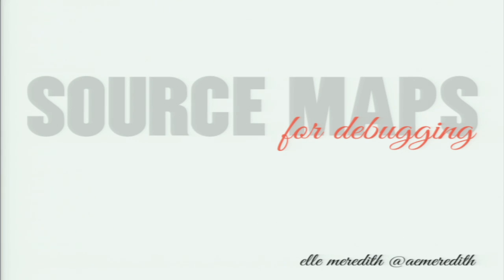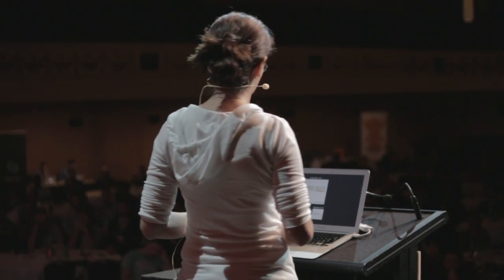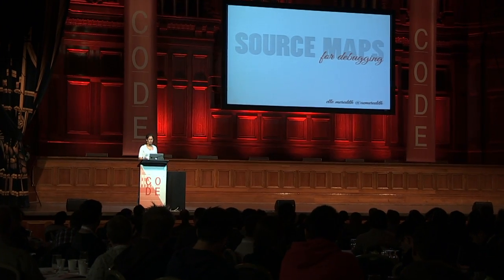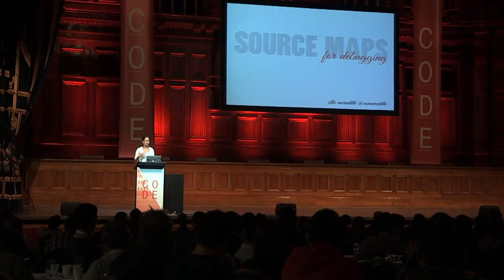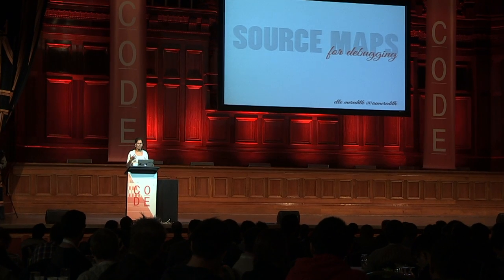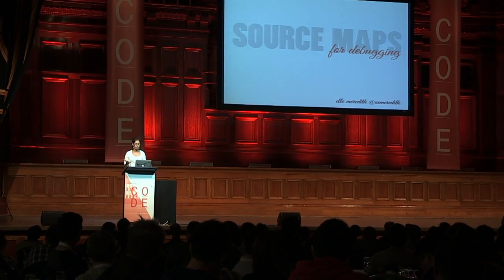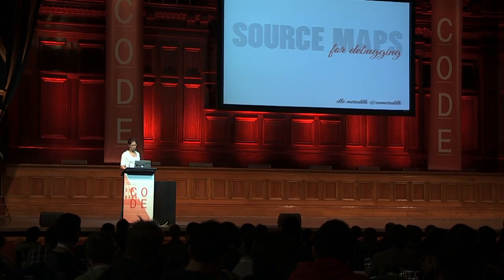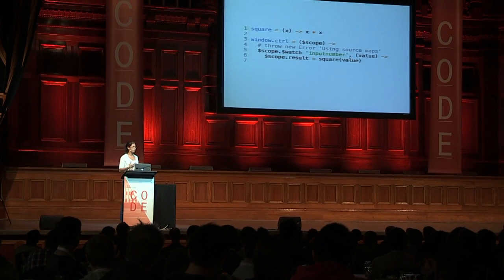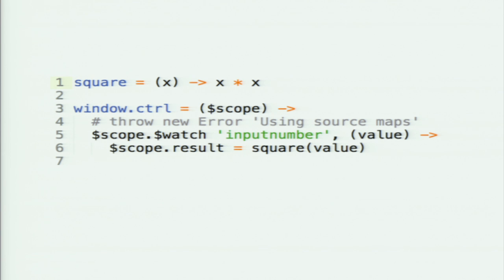I want to talk about source maps for debugging your applications in production. Usually when we develop applications, the way we write code on the development side is very different than the code that you have in production.